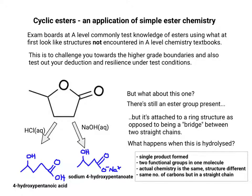You end up with a single product formed in each case instead of two separate products like the textbook would suggest for normal esterification. There are two functional groups in each molecule if you look quite closely. With acid hydrolysis you get 4-hydroxypentanoic acid — you recreate the carboxylic acid and the alcohol group. With alkaline hydrolysis you get a carboxylate salt and an alcohol, just like you would have if it was a straight chain ester.